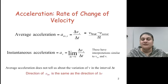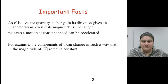Note, since velocity is a vector, acceleration is also a vector. Some important facts: since velocity is a vector, the change in its direction gives an acceleration, even if its magnitude is unchanged. For example, the components of V can change in such a way that the magnitude of V remains constant. Can you think of any examples?